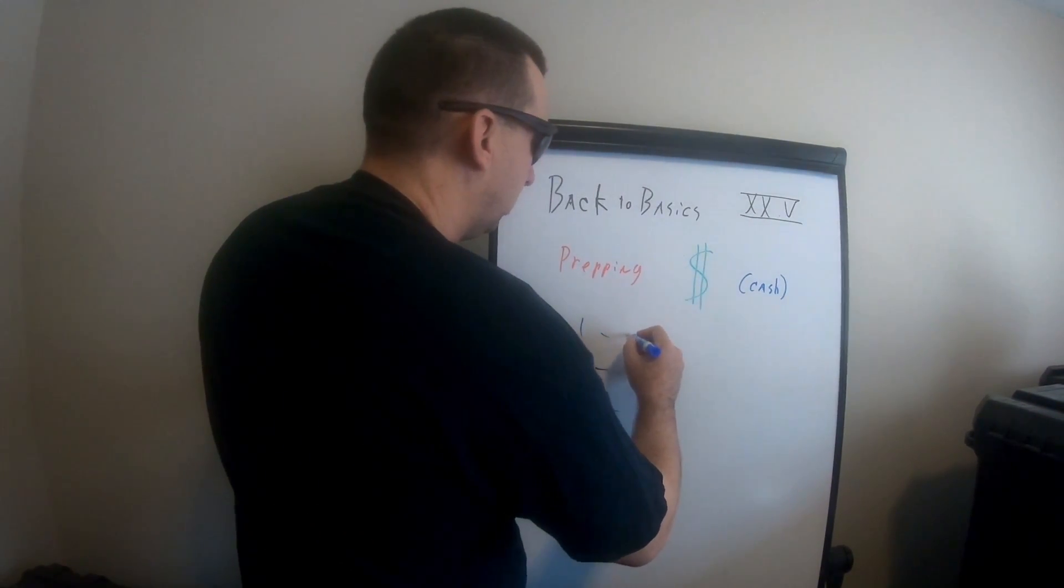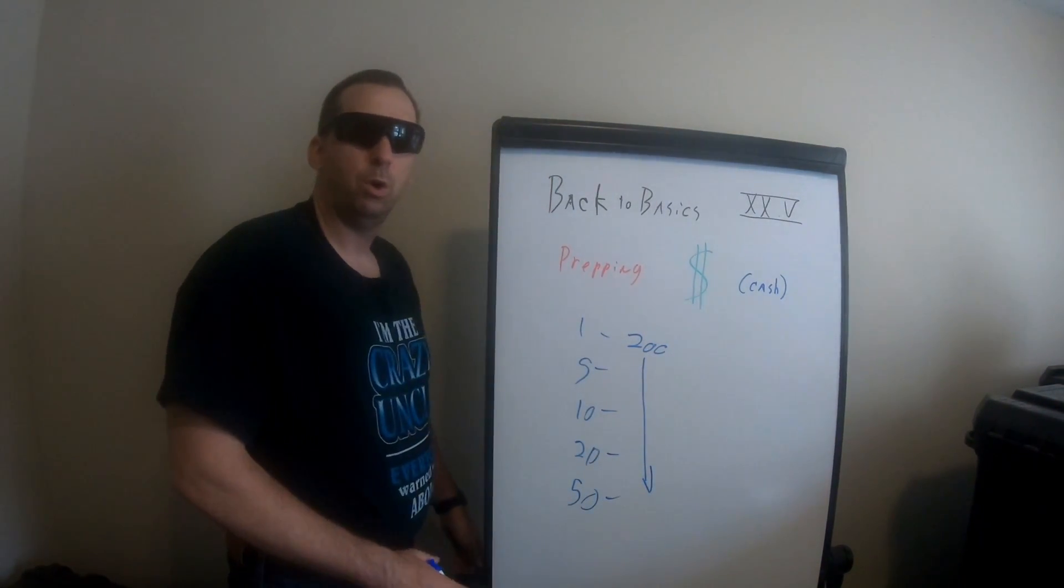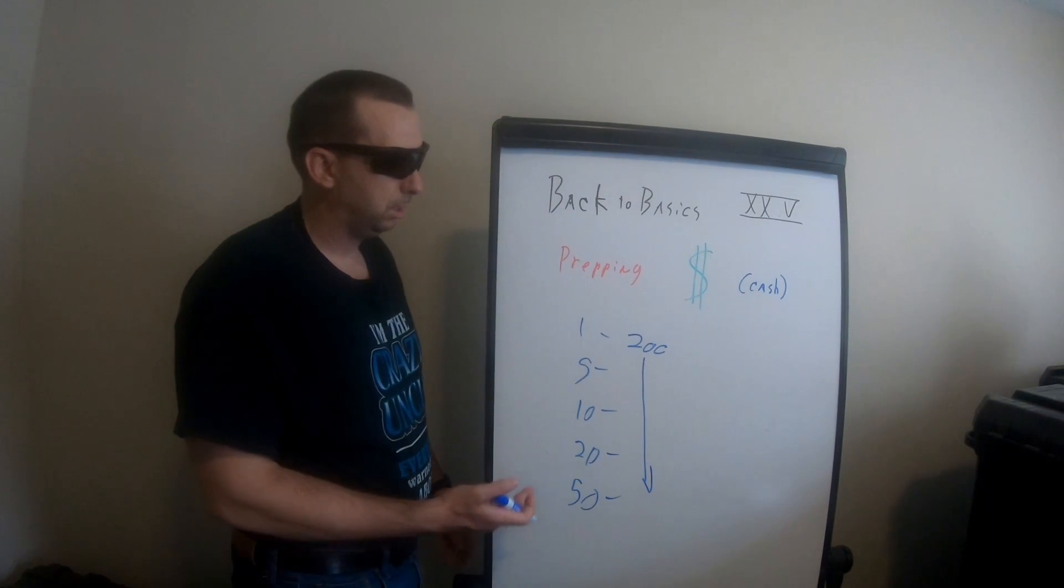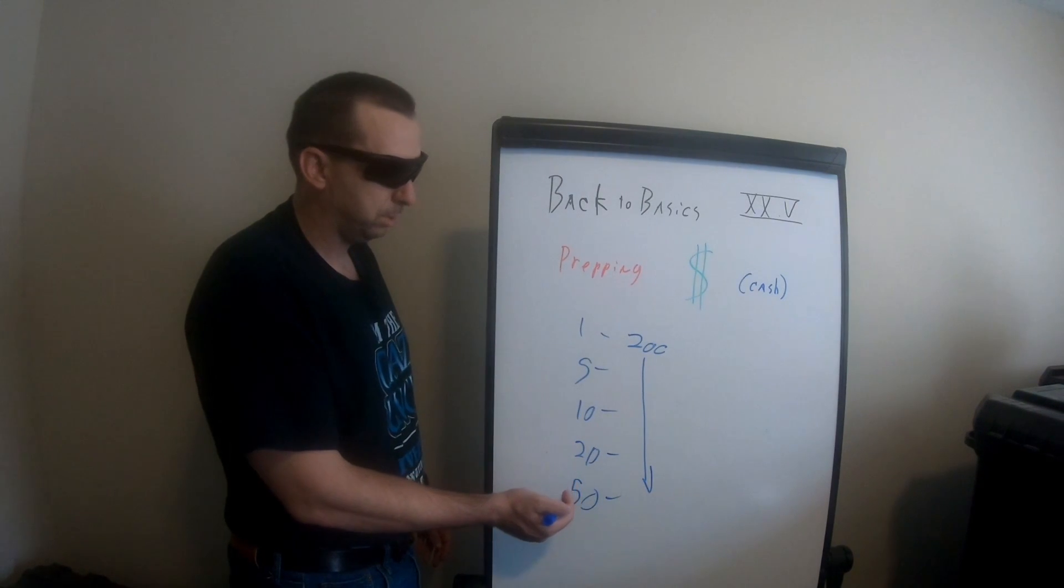So it's real easy. For each of these, you'll get $200 worth over time. $200 in ones, $200 in fives, $200 in tens, $200 in twenties, $200 in fifties.